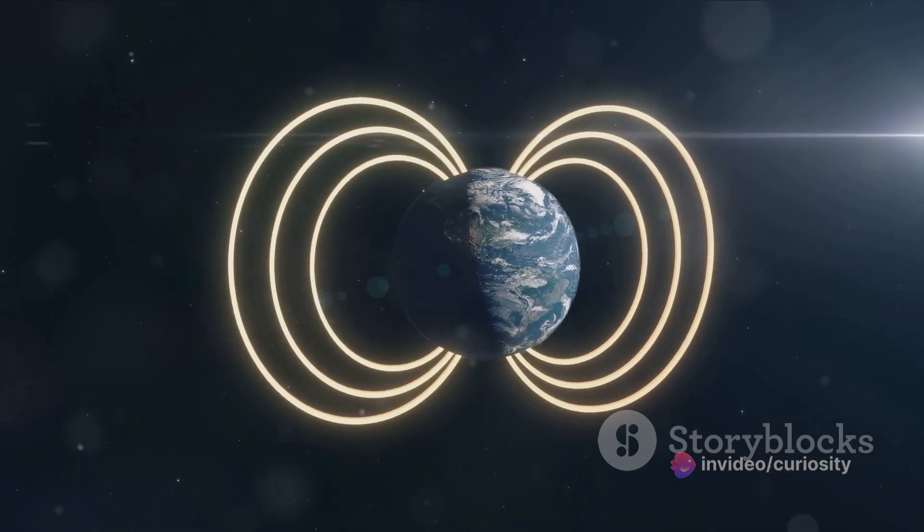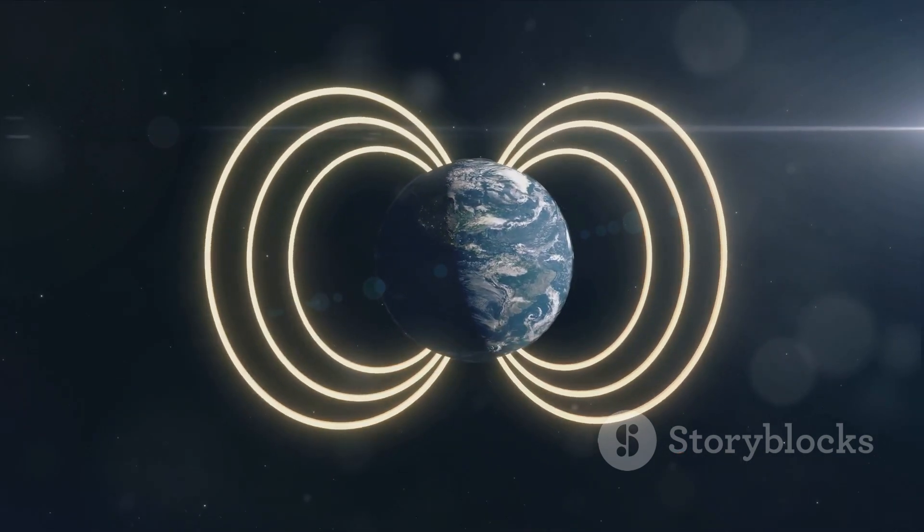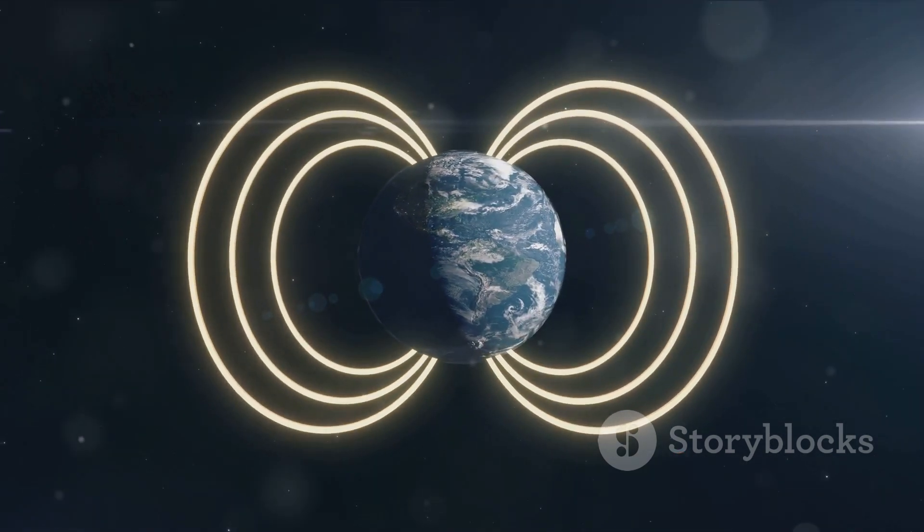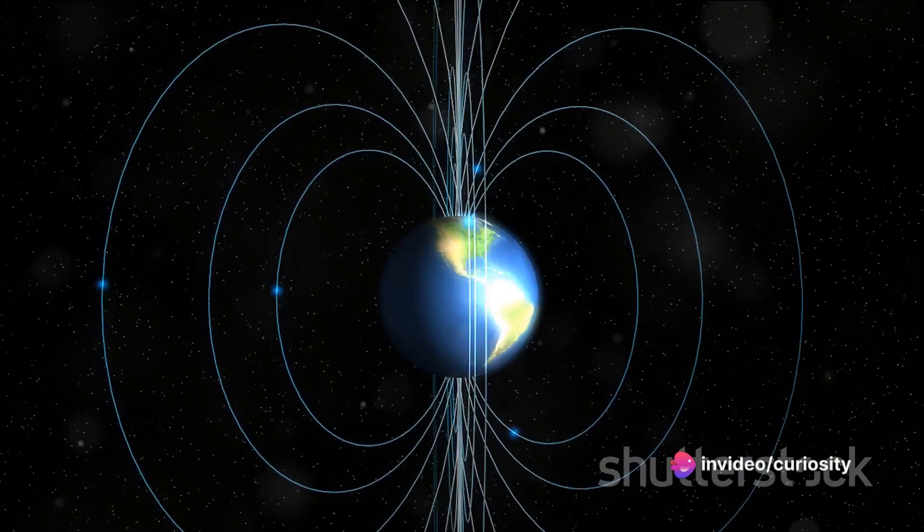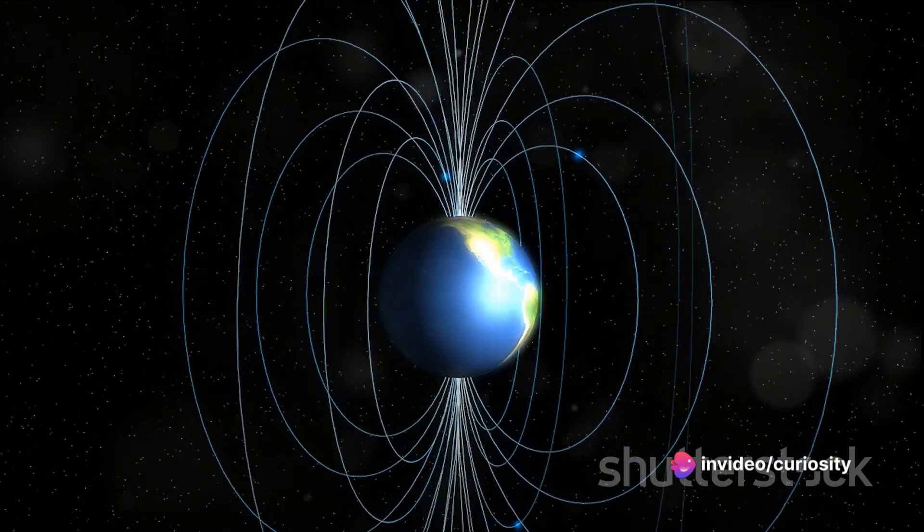Furthermore, both Earth and Mercury have magnetic fields, although Mercury's is about 1% as strong as Earth's. This is surprising considering Mercury's small size and slow rotation, which traditionally wouldn't allow for a magnetic field.